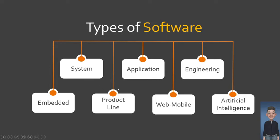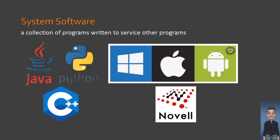So let me explain to you briefly each type. First, system software. It is a collection of programs written to service other programs. A good example of system software are compilers like Java, Python, and C++. We also have editors and file management utilities.